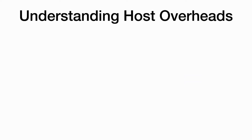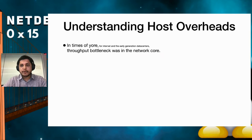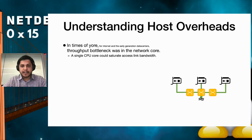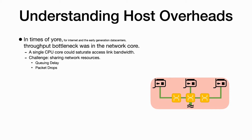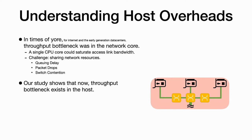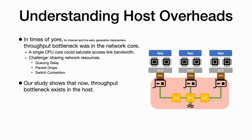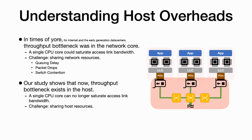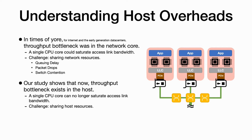For early generation data center networks and the internet, the throughput bottleneck existed in the network core, since a single CPU was enough to saturate the entire access link bandwidth. The main challenge was sharing network resources efficiently, like switch buffers, managing queuing delays, switch bandwidth and switch contention. However, for modern NICs with 100 Gbps and more bandwidth, a single core can no longer saturate the entire access link bandwidth. The bottlenecks have shifted to the host hardware, and the challenge now exists in sharing host resources like PCIe bandwidth, DRAM bandwidth, LLC capacity, CPU cores, and so on.